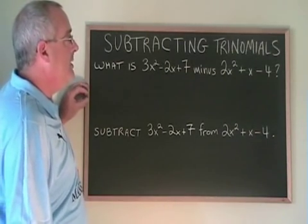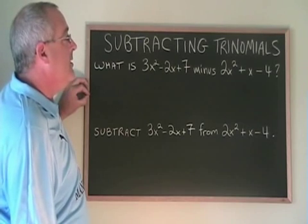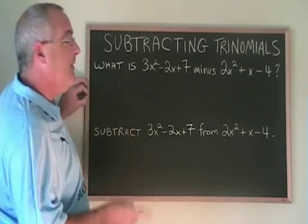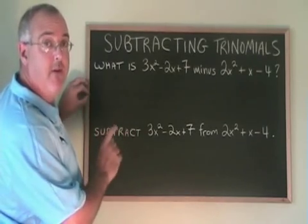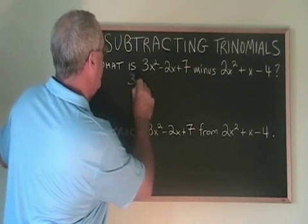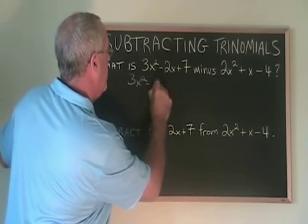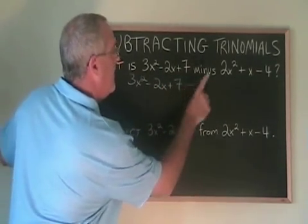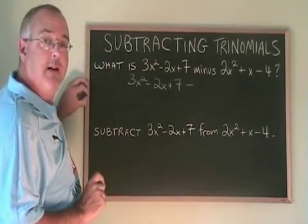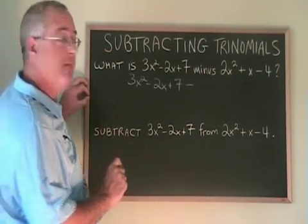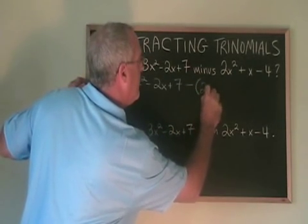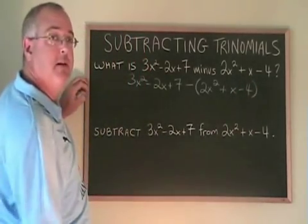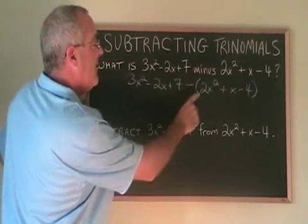The way you do a subtraction of trinomials is you rewrite the question. You take the trinomial that is having something subtracted from it and you write it first. Then you put a minus sign. That's this minus right here. Then you put the second trinomial but you put it in a bracket. We do this because the entire trinomial is being subtracted, not just the first term.